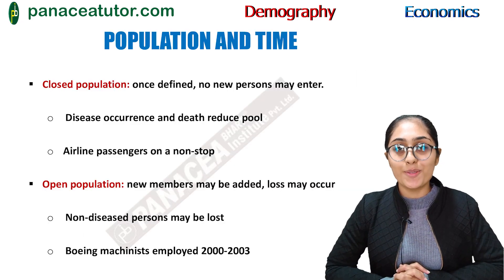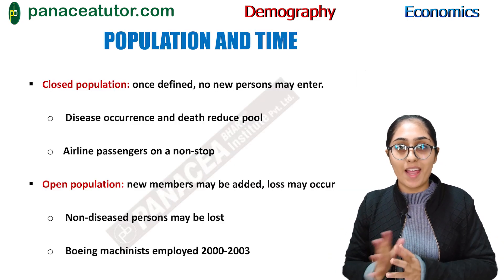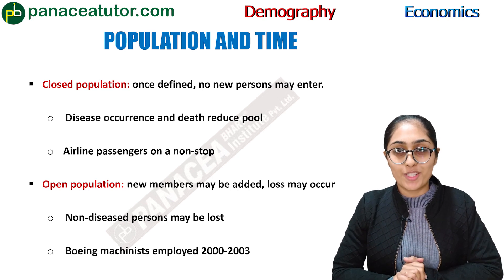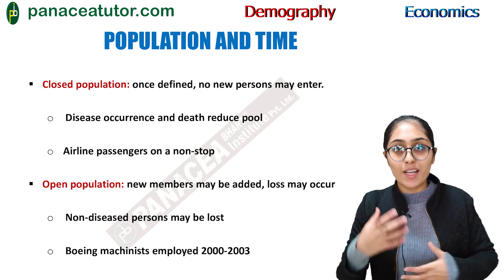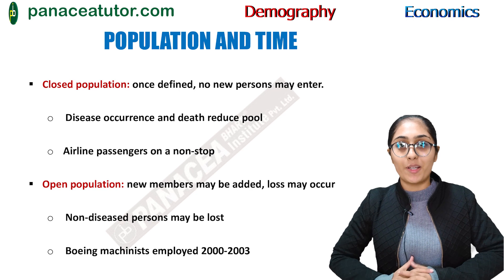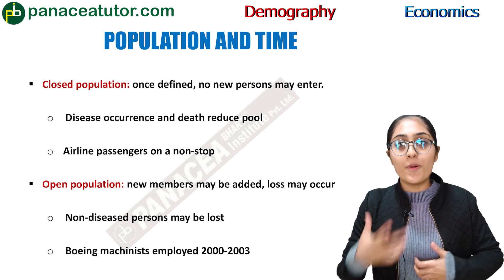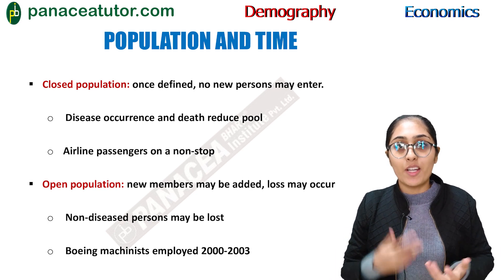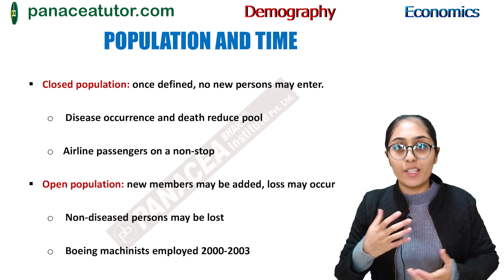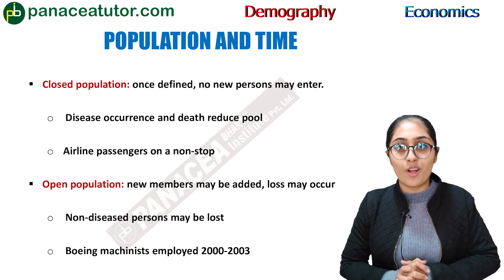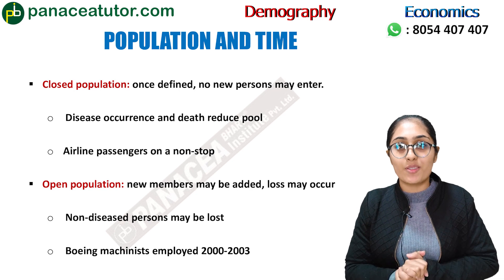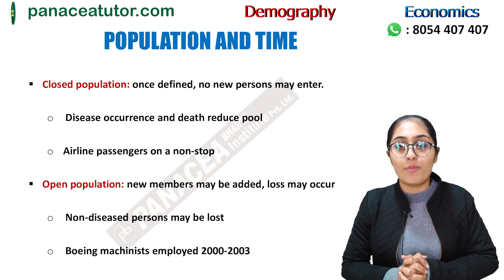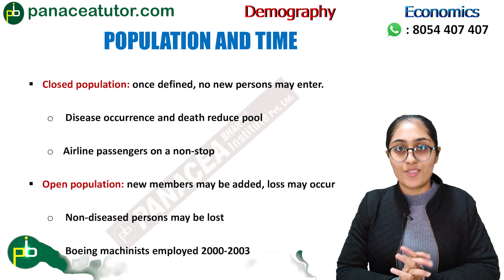Next we will study closed population and open population. Closed population means no new person has entered into the economy — no new person has migrated into the economy. Open population means new persons are entering into the economy; people are migrating from one country to another country.